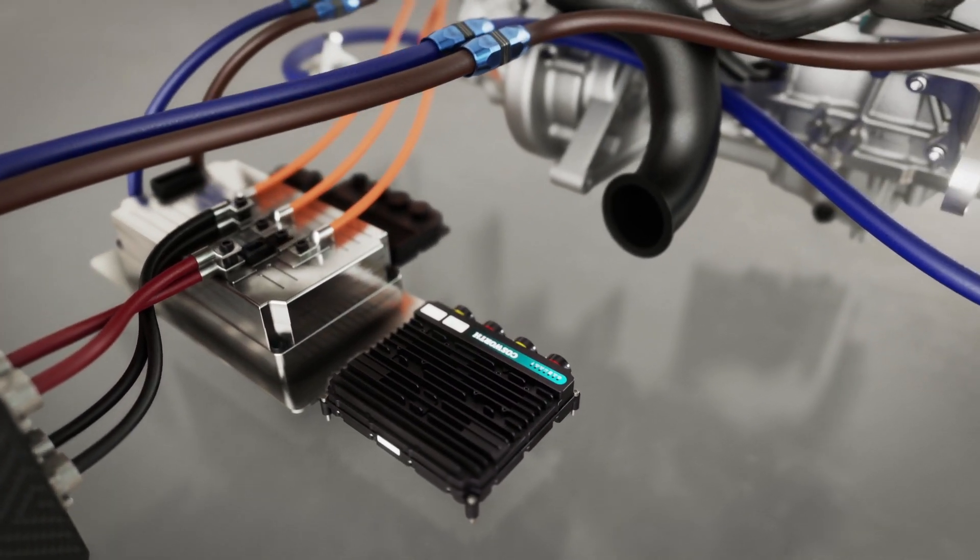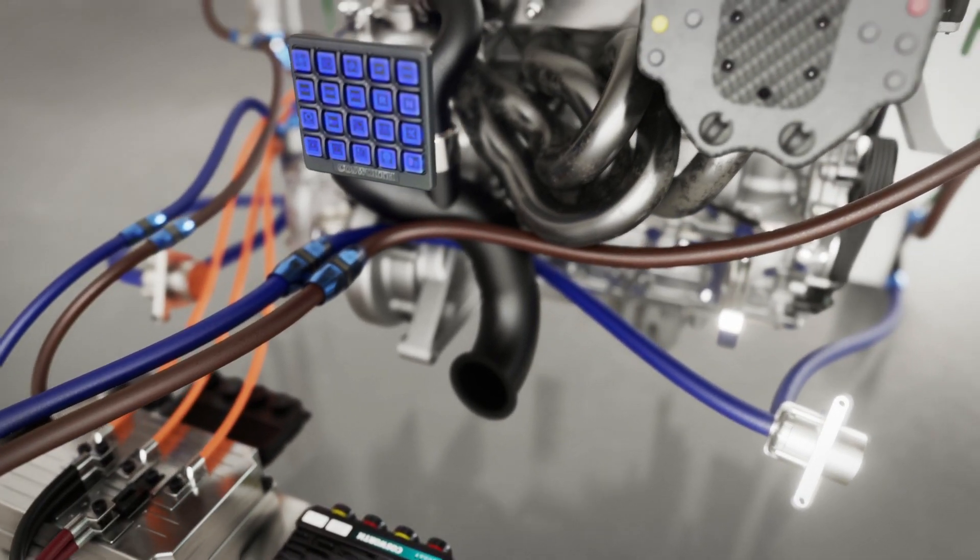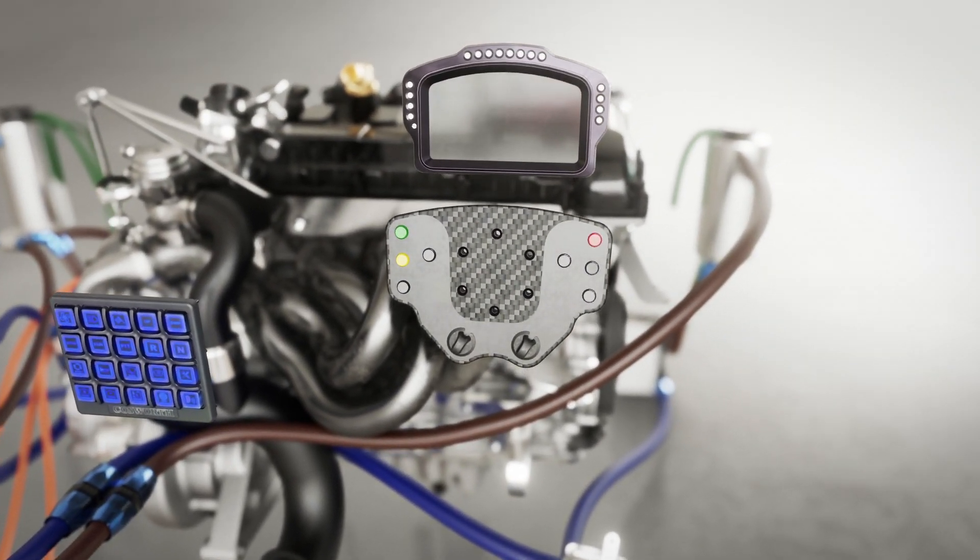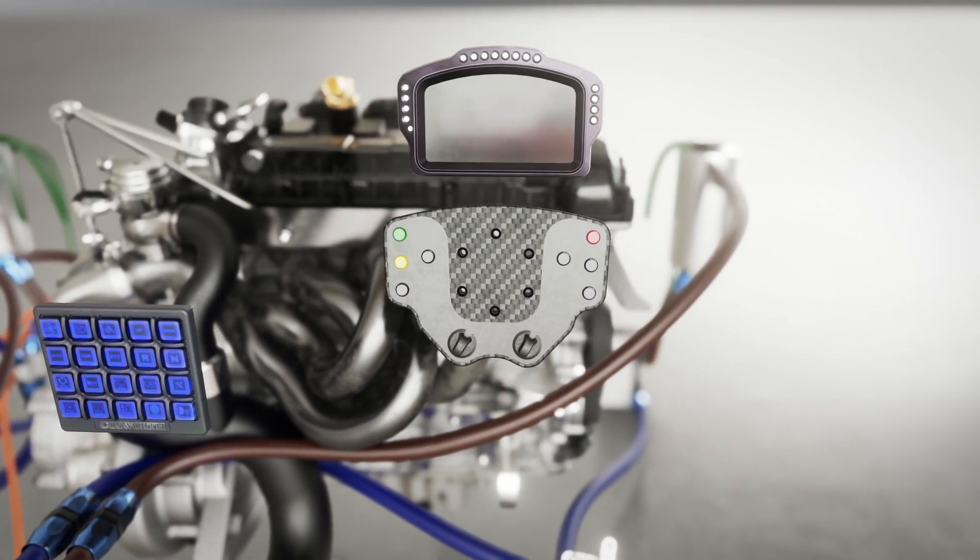Now let's look at how the system works. We'll start with energy deployment. The driver is in control of when they choose to deploy the energy via a button on the steering wheel.